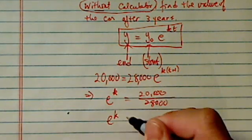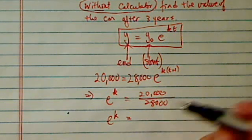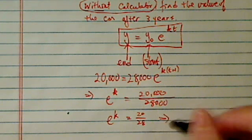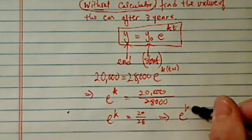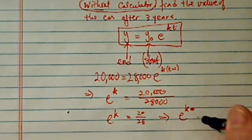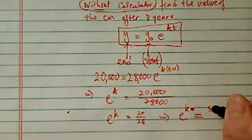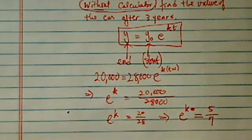Let's simplify it a little bit. We don't know what K is, since without a calculator we won't be able to find out. So 20,000 over 28,000, which is really E to the K, is equal to, that's divided by 4, so we have 5 over 7. That's as far as we can go.